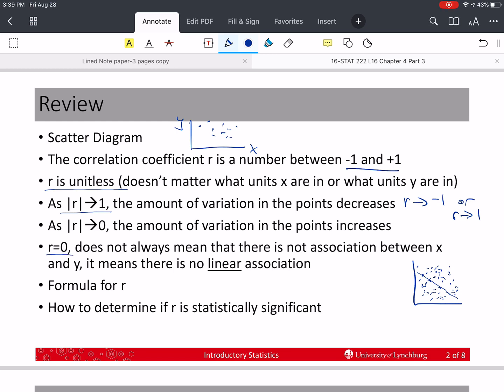If R is 0, that doesn't mean that there's no association between X and Y. It means there's no linear association. So I could have something that's actually the extreme case I went over, which was a very perfect parabola. A straight line drawn through that would be a parallel. The slope would be 0, and R would be 0 here.